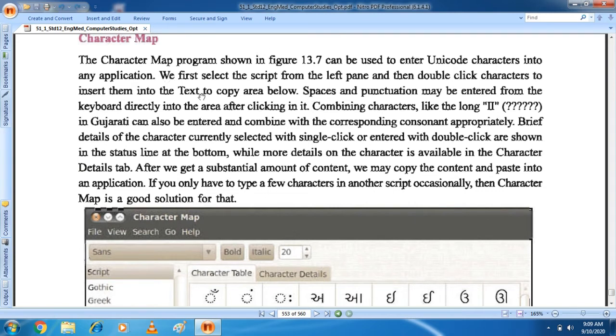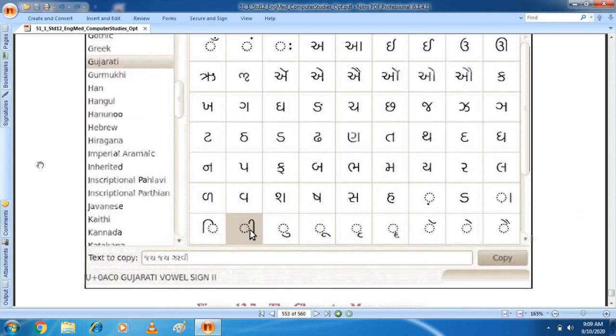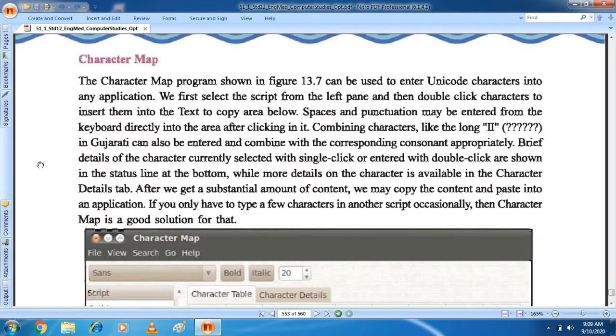If you want to write text, you can see it here. We will select the script. First of all, we will select the script. Then, from the left hand, double click the characters to insert them into the text to copy area below. We will select the text to copy area below. Then after that, spaces and punctuation may be entered from the keyboard directly into the area after clicking in it. Now, the special characters like question mark, hash, at the rate, dot.